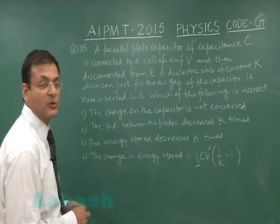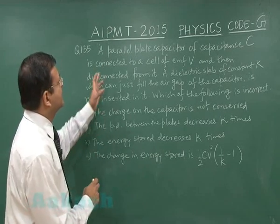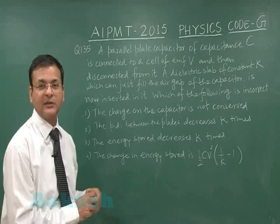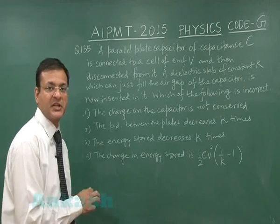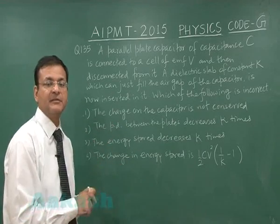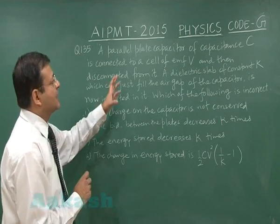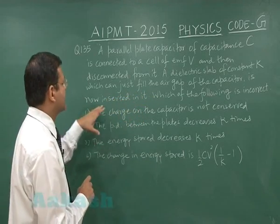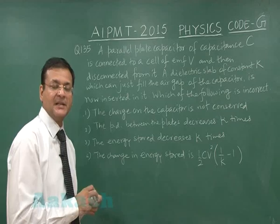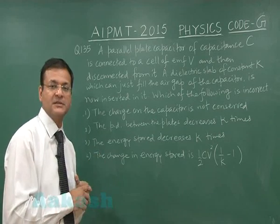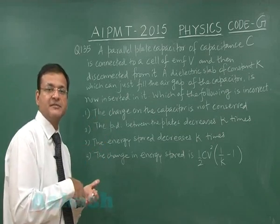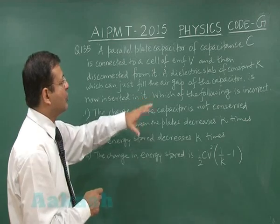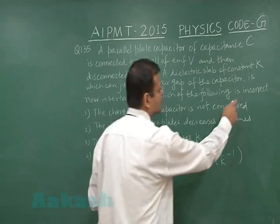Question 135 is related to a capacitor. A parallel plate capacitor of capacitance C is connected to a cell of EMF V and then disconnected from it. After disconnection, the charge on the capacitor is conserved. A dielectric slab of constant k, which just fills the air gap, is then inserted. As a result, capacitance increases, but charge remains the same — so potential difference decreases, electric field decreases, and energy stored decreases. You have to find the incorrect statement.